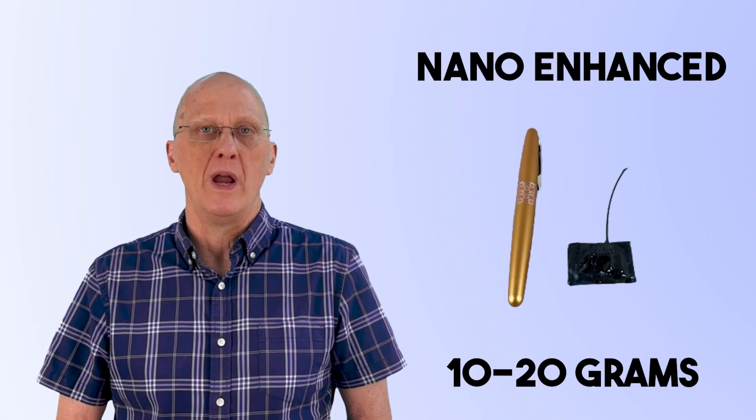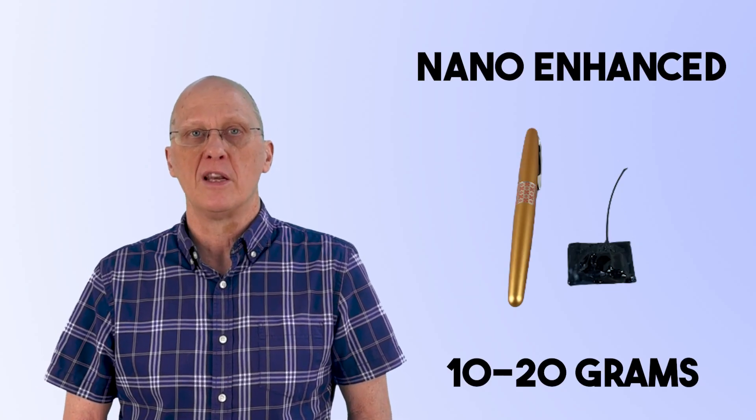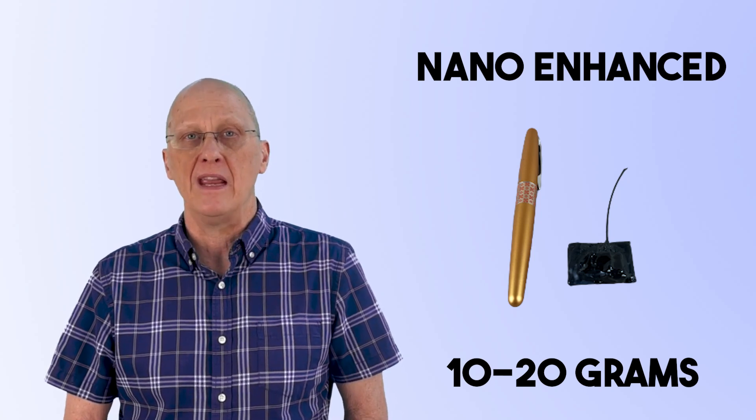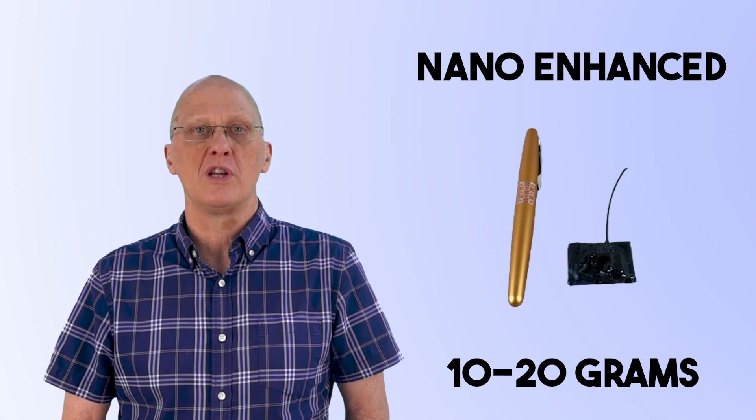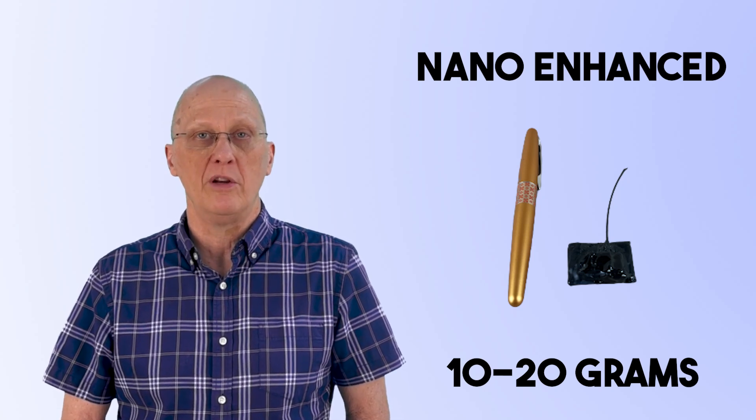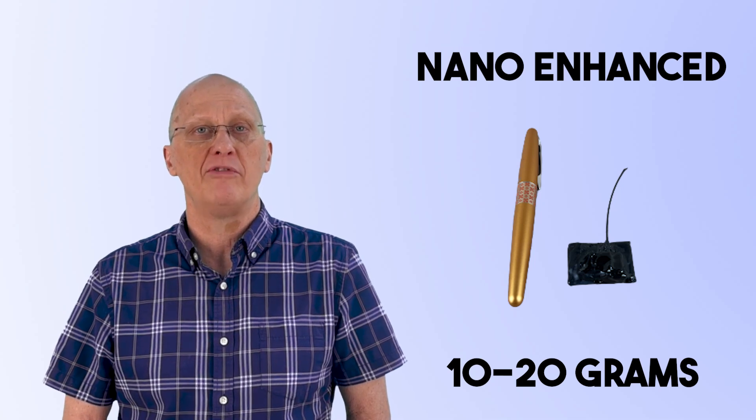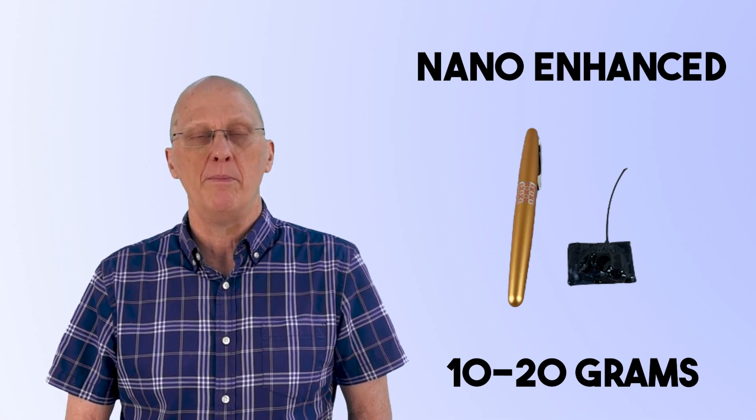If you can tolerate a bit more weight and would like to be able to use the device in a more closed canopy, the next product is Nano Enhanced. It is still small and works when you can tolerate a weight of 10-20 grams. Data downloads are automated and by UHF transceiver. Battery life can be up to one year.